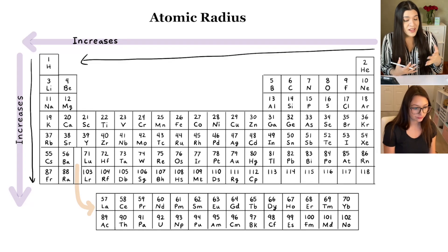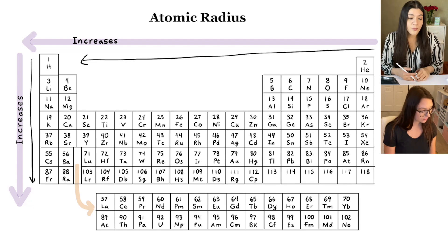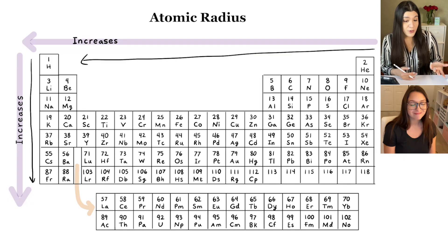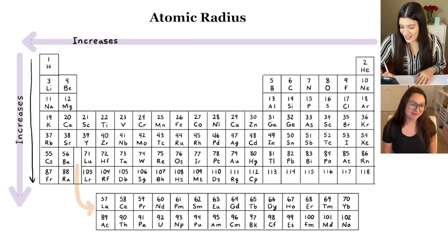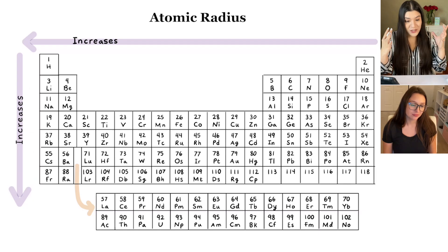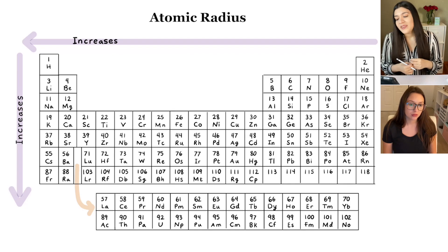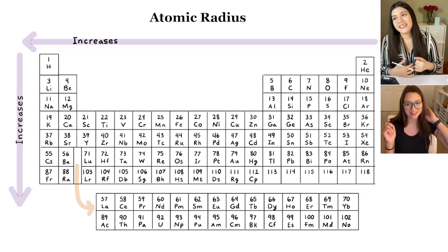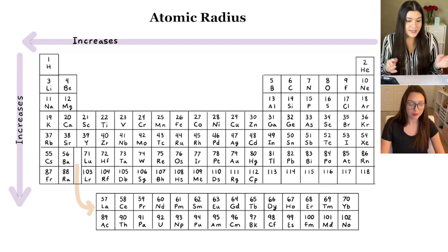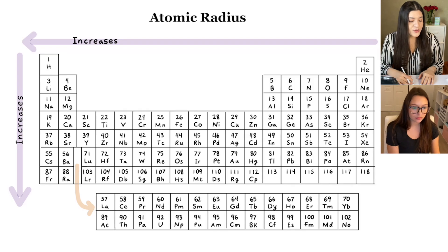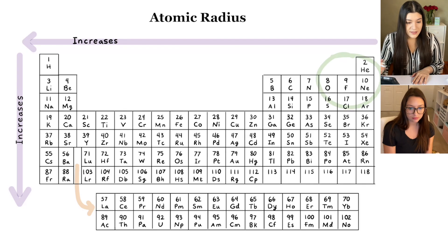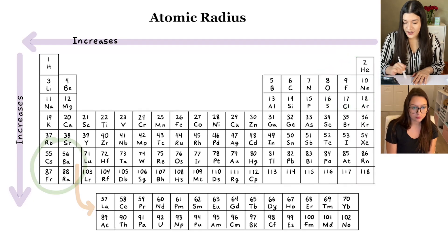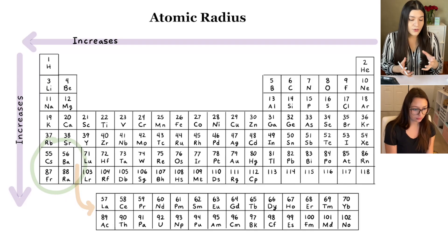This is really important to know. With periodic trends, it's about understanding how the trend works and how it increases, because you'll get questions comparing two different atoms and asking which has a higher atomic radius. Know this image — burn it in your brain. Atomic radius is opposite to electronegativity and ionization energy, which go in the opposite direction. In this case, the highest atomic radius is in the opposite corner — moving down and to the left.